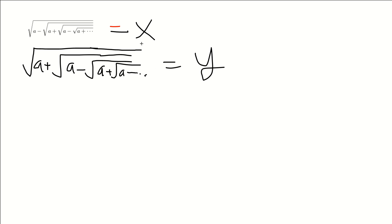And then now what we can do is we can substitute y into here, and we can substitute x into here. So we end up getting the square root of a minus y is equal to x, and the square root of a plus x is equal to y.